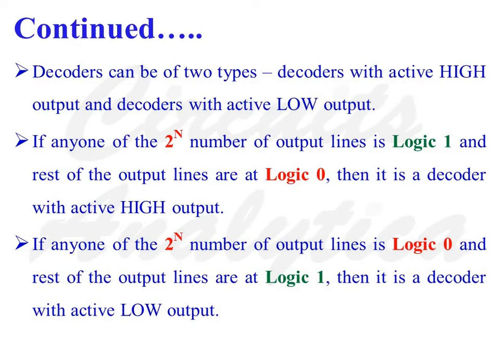Decoders can be of two types: decoders with active high output and decoders with active low output. For a decoder with active high output, any one of the 2-to-the-n output lines is logic 1 and the rest are logic 0. On the other hand, for a decoder with active low output, any one of the 2-to-the-n output lines is logic 0 and the rest are logic 1.